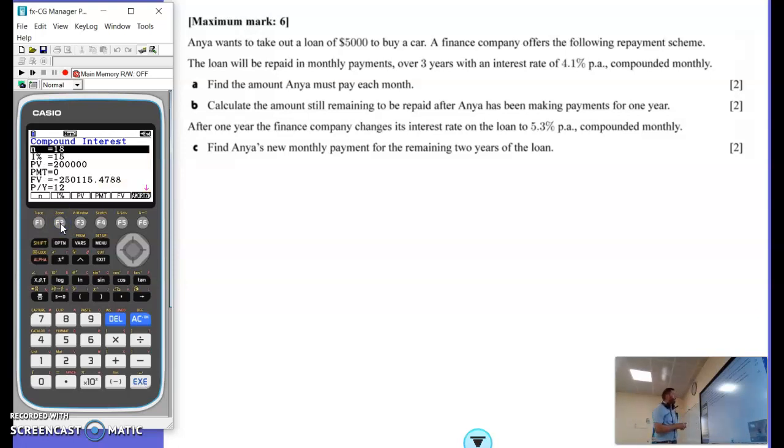We have a three-year monthly payment. The number of payment periods is three years times 12 months. You can put in 36 if you want, but it'll do that for you if you put it in as a calculation. Our interest rate, 4.1%. The present value in our pocket, or in Anya's pocket, is $5,000.